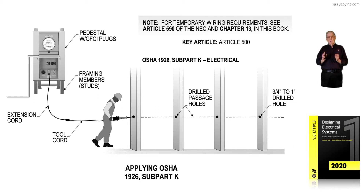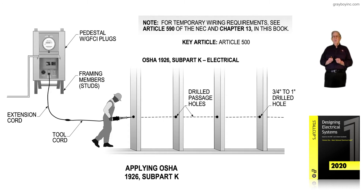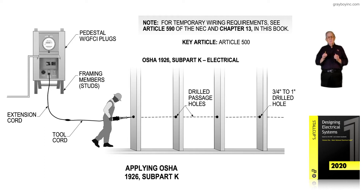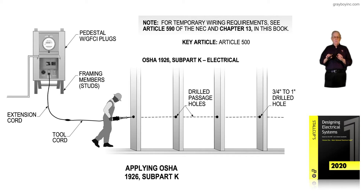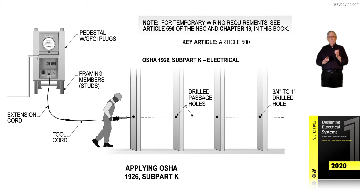The framing members can be used as supports to support the cable or wiring method. Notice this is temporary wiring, so the key article would be Article 590. Article 590 deals with temporary power construction regulations that are less stringent than the wiring methods for a particular piece of equipment or installation. The only thing that Article 590 requires to meet Article 230 would be the service equipment that's feeding that pedestal.